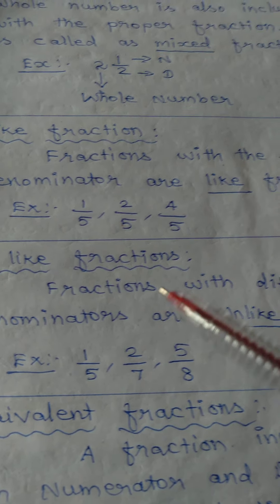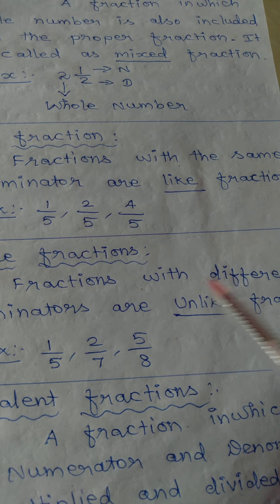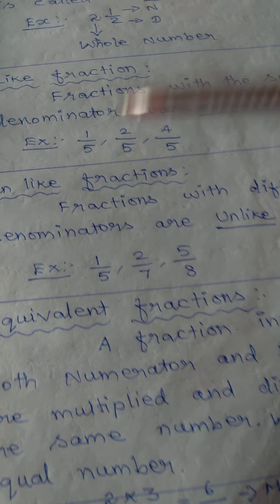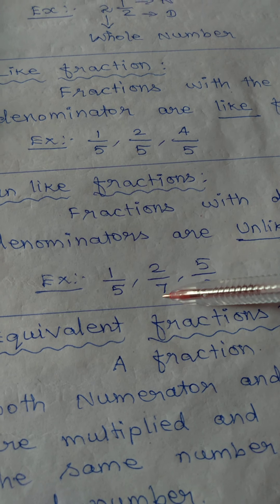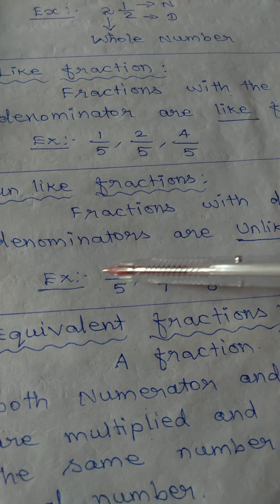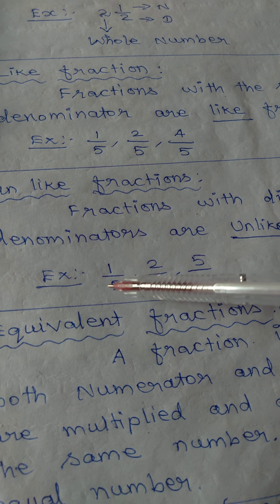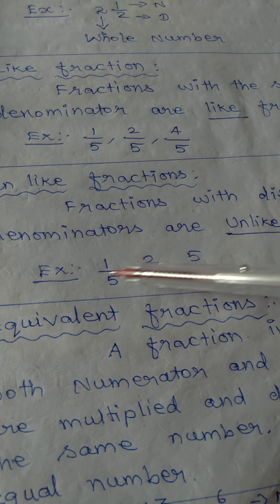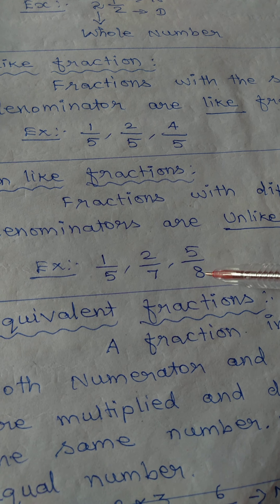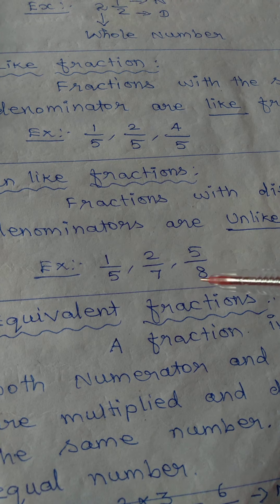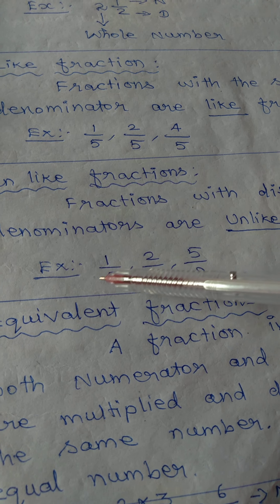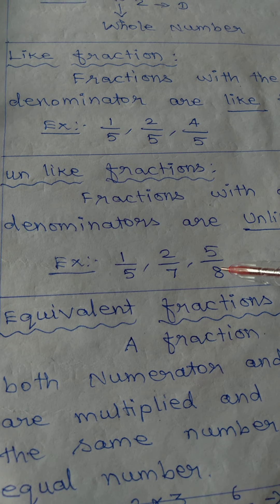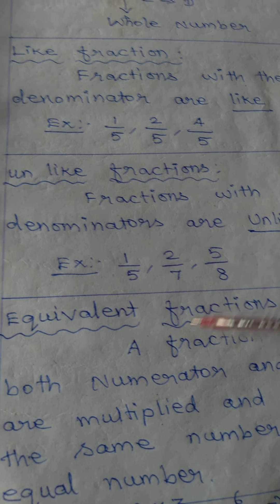Unlike fractions are fractions with different denominators. For example: 1 by 5, 2 by 7, and 5 by 8 — the denominators 5, 7, and 8 are all different, so these are unlike fractions.